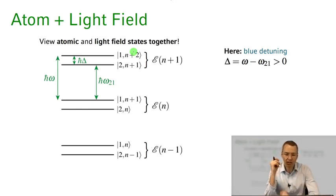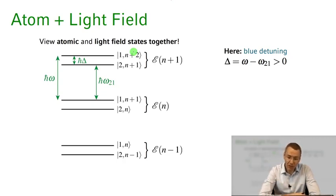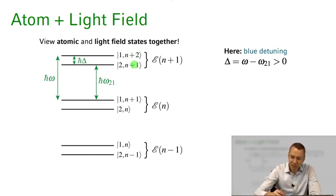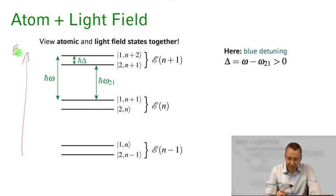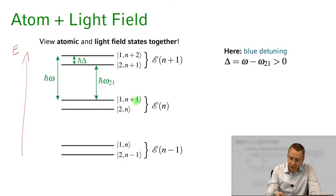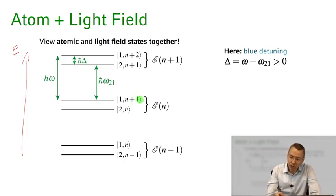We actually see that if we have a near-resonant interaction — here I'm considering the case where the detuning between the atom and the light field is slightly blue detuned, so the light field has a slightly larger energy than the atomic resonance frequency — we can group these states very effectively together. If we plot them as a function of energy, we see that they group together in pairs, where the atom is in the excited state |2⟩ with n photons, paired with the excited state with n+1 photons. If we were on resonance, these two states would fall on top of each other. Since we're slightly blue detuned, the state with one photon more but the atom in the ground state has slightly more energy than the atom in the excited state with one photon less.